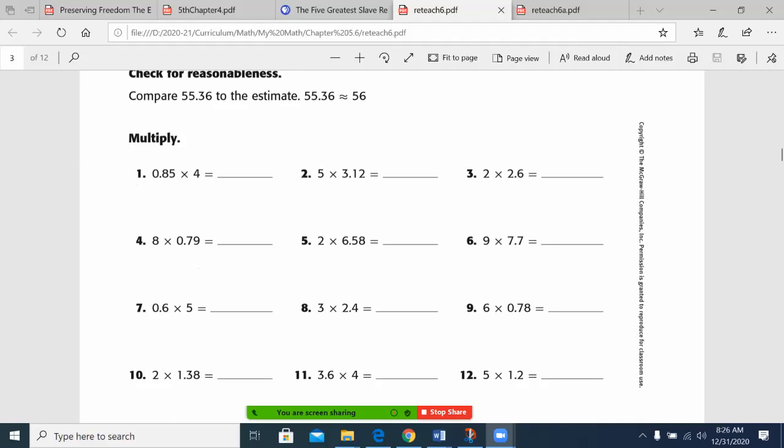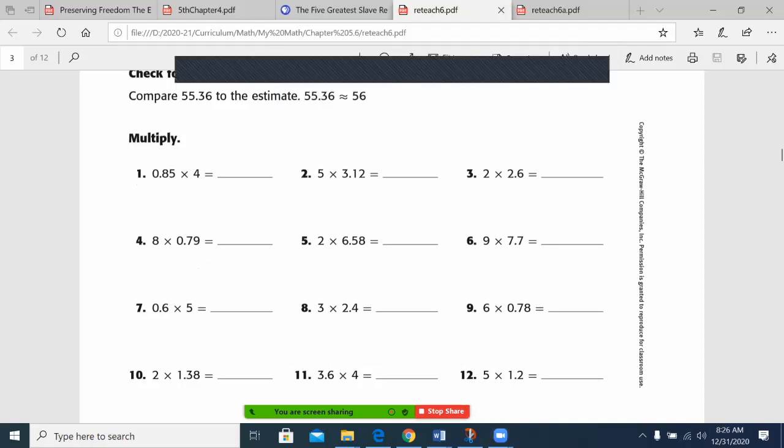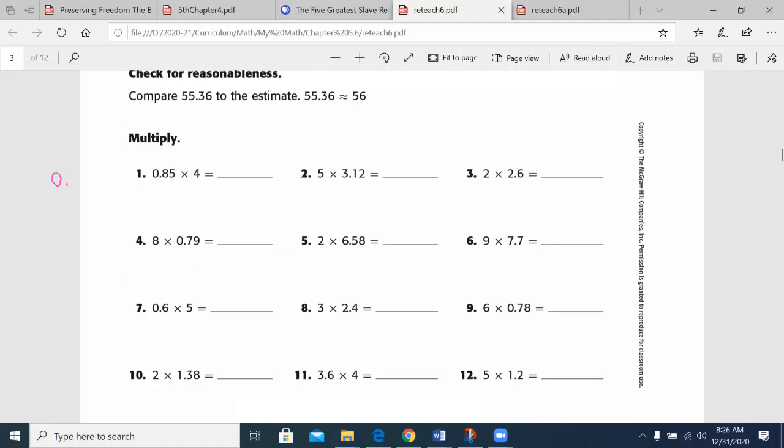So let's do this. Let's do a couple together here. And then you'll end up being assigned a few as well. Grab the annotation tool. 0.85 times 4. You could choose to just put 0.85, but I wanted to make sure that you didn't accidentally forget it. Times 4. So I'm originally going to use my standard algorithm for multiplication. 5 times 4 is 20. Put the 2. 8 times 4 is 32. Plus 2 is 34.